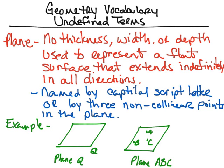In the first example, I used the capital script letter Q, so we can call this plane Q. In the second example, there are three non-collinear points on the plane — point A, point B, point C — so I can also name this plane ABC. Because those are points, we use capital letters: capital A, capital B, and capital C. Again, a plane has no thickness, no width, and no depth, and we use it to represent a flat surface that extends indefinitely in all directions.